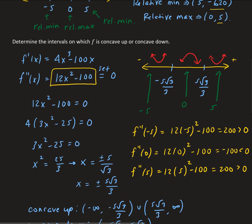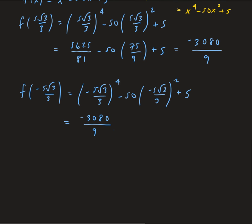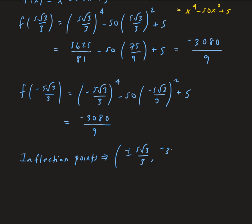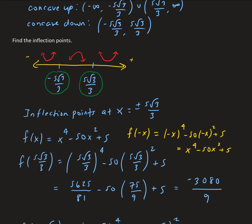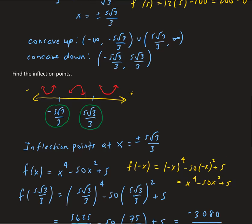So the coordinates for the inflection points are plus or minus 5 root 3 over 3, with y-value negative 3080 over 9 for both. They have the same y-value because the function is even. With all this information, you can easily sketch what the function looks like.